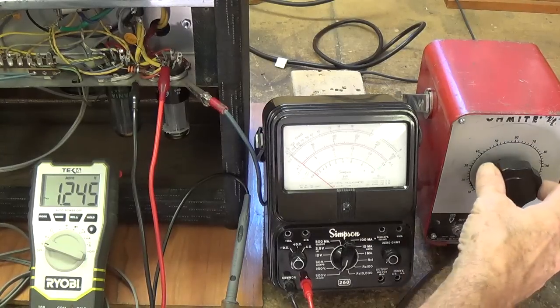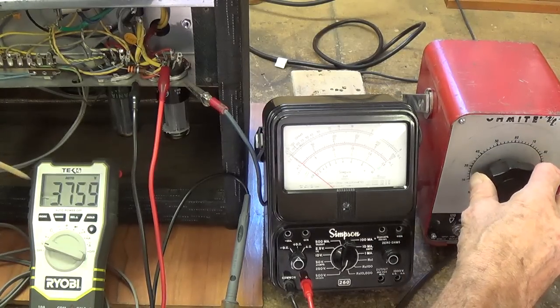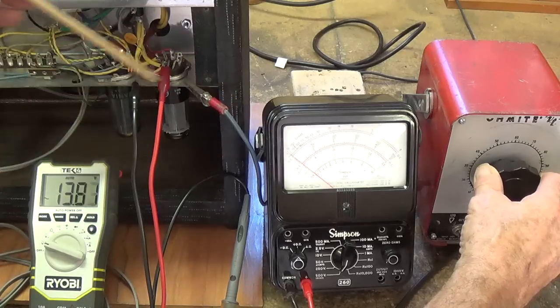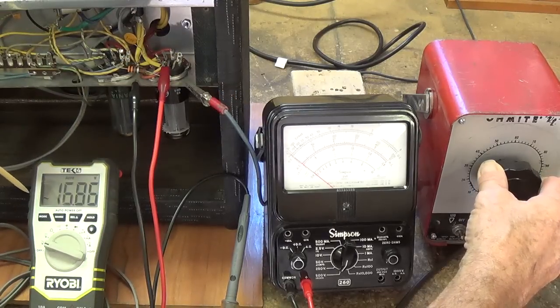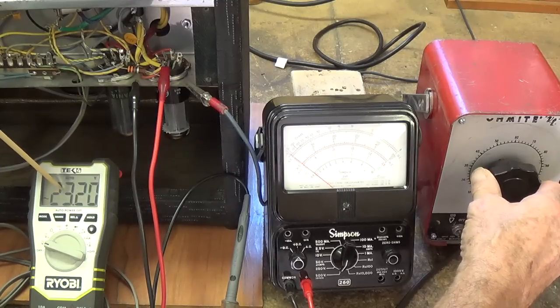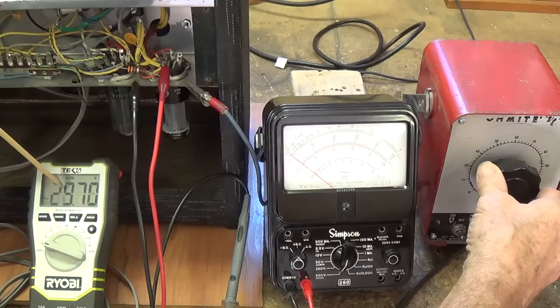Now let's slowly crank up the AC input until we see some deflection in the B plus output. Right now it's at zero. We're at 18, 20 volts input, 30.